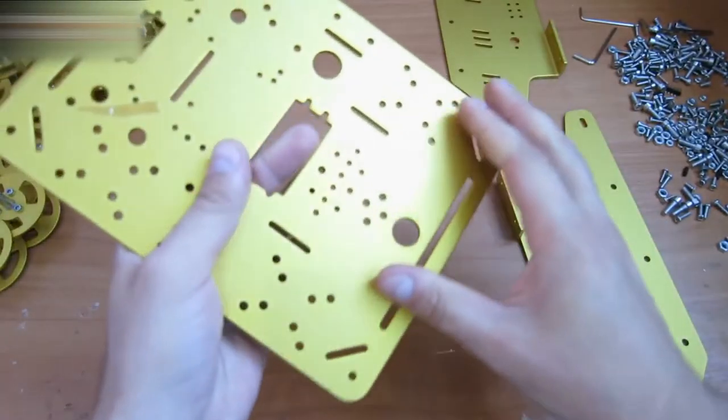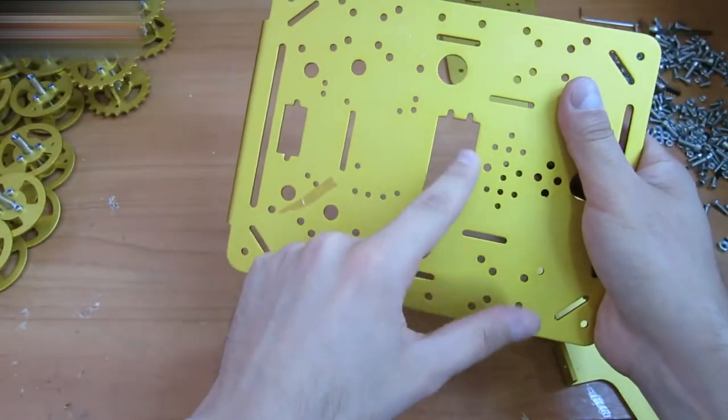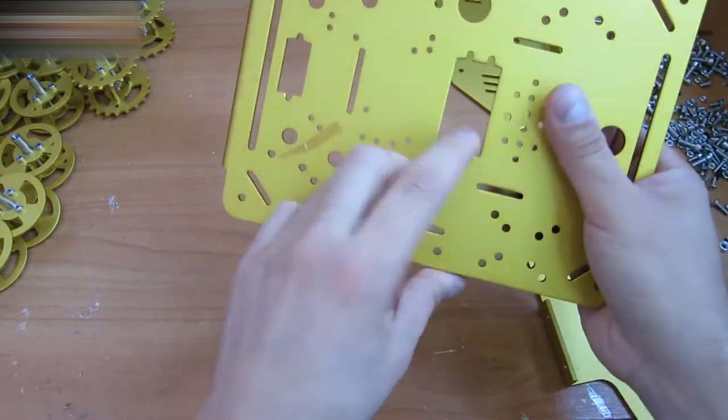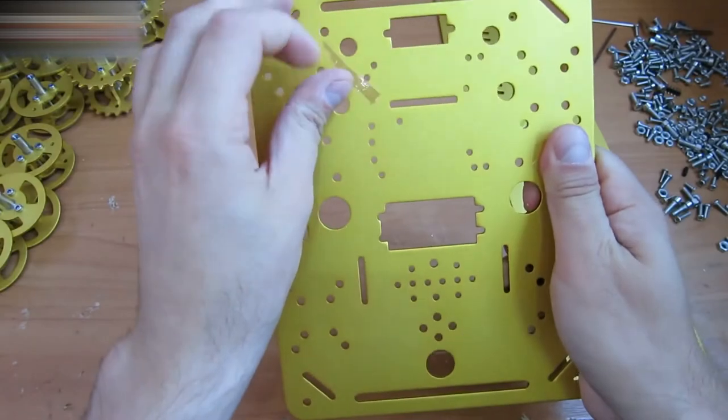Now let's assemble the body of the robot. Here you can see that this hole is for a G90 servo actuator, and this bigger one is for the MG995, for example. They don't come in the set, but you can buy them separately and program them.